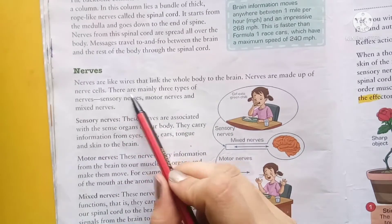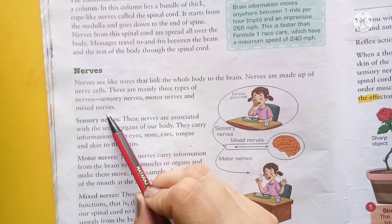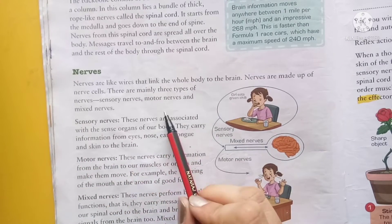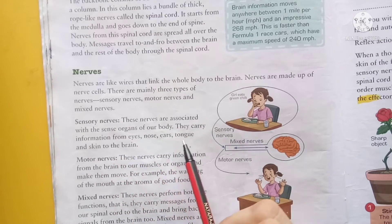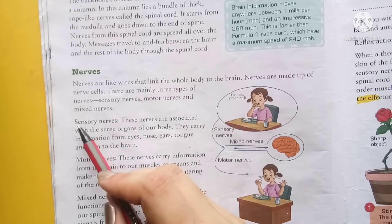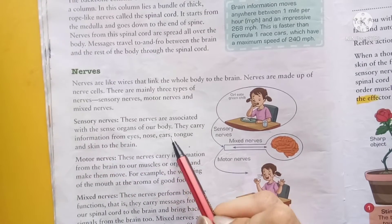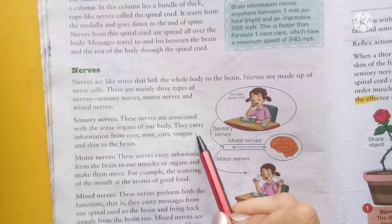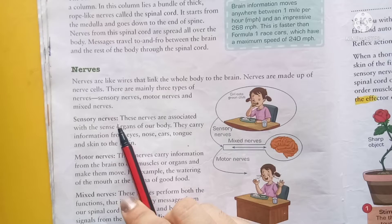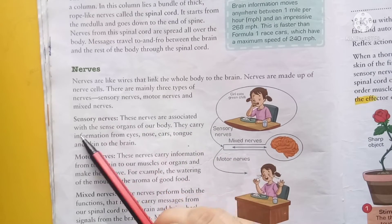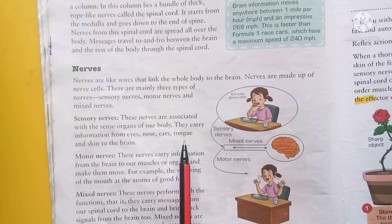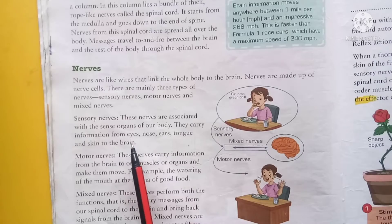There are mainly three types of nerves: sensory nerves, motor nerves, and mixed nerves. First is sensory nerves. These nerves are associated with the sense organs of our body. They carry information from eyes, nose, ears, tongue, and skin to the brain. इसलिए इसको sensory nerves बोलते हैं. जो भी information हमारे sense organs produce करते हैं, वो sensory nerves के through brain तक पहुंचती है.